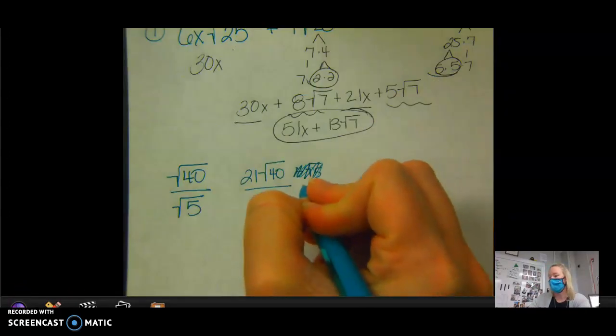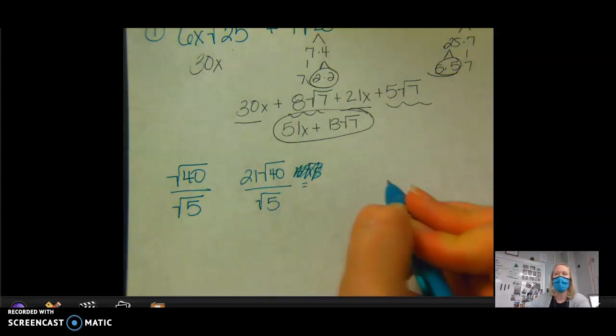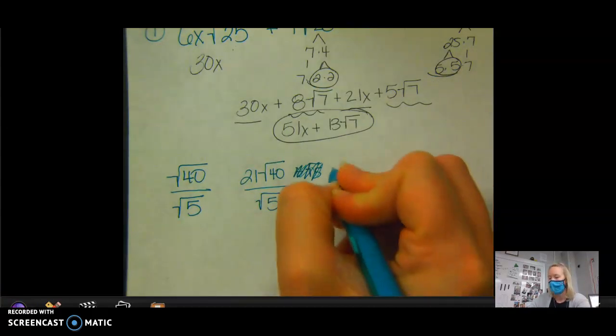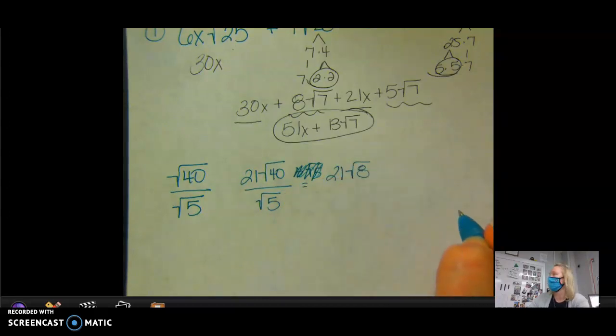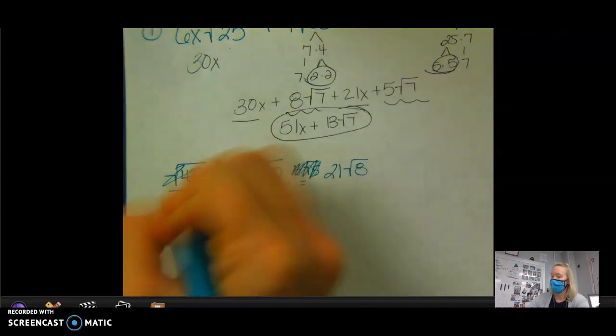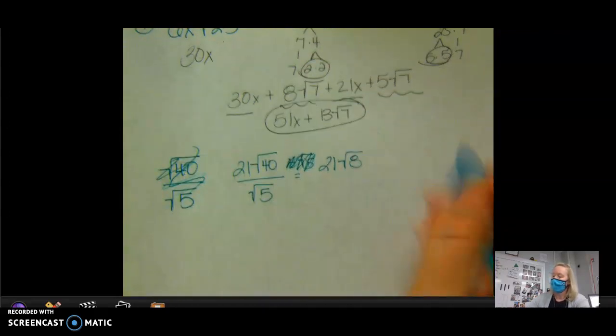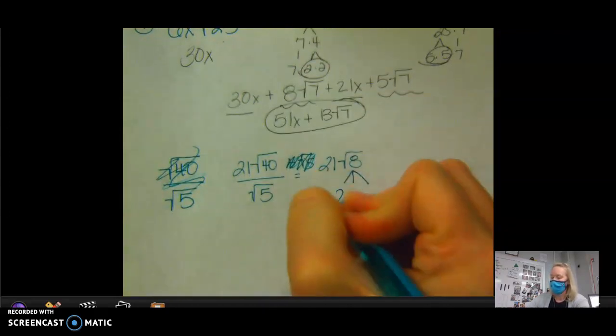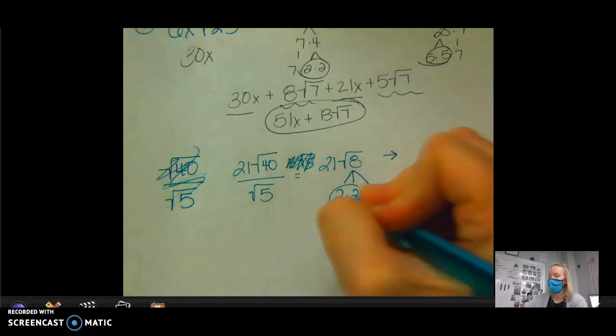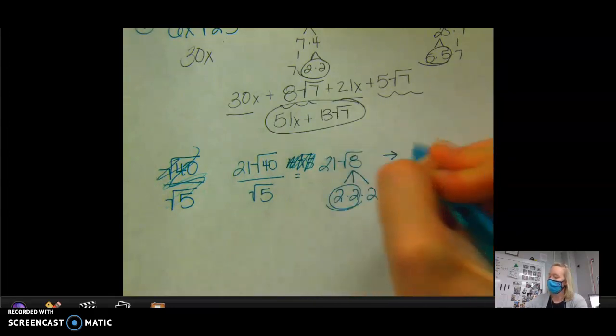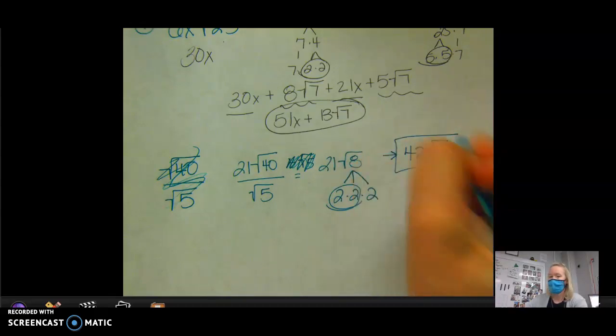So since this reduces, instead of rationalizing the denominator right away, I'm going to reduce it because it makes it easier. What is 40 divided by 5? 8. So that becomes 21 square roots of 8. And then I'm going to break down 8 into 2 times 2 times 2. I have a pair of 2s. So what comes out? 2. And it's going to multiply to that 21. So that would be 42 square roots of 2.